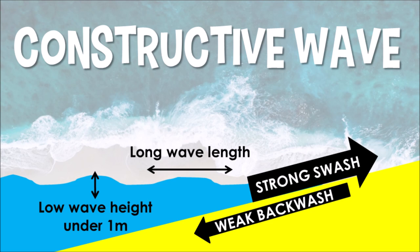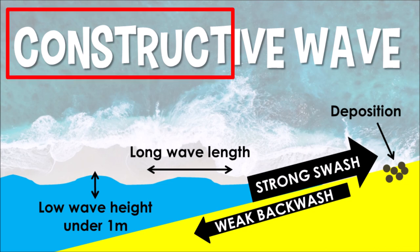Now because constructive waves have a really strong swash and lots of energy when they go onto the coastline, they will deposit — they will drop off that sediment, that sand, that rock onto the beach. And it will leave it there because it doesn't have enough energy to then wash it back into the sea or ocean through backwash. And this is why they're called constructive waves — because they construct, make, and build our coastlines.